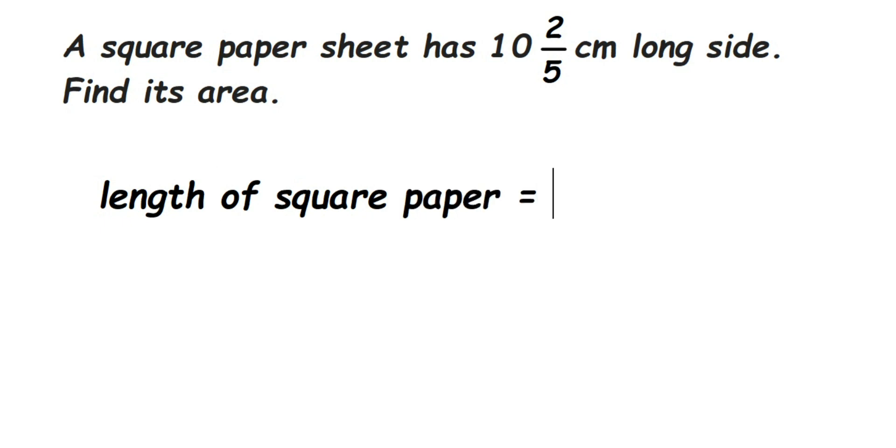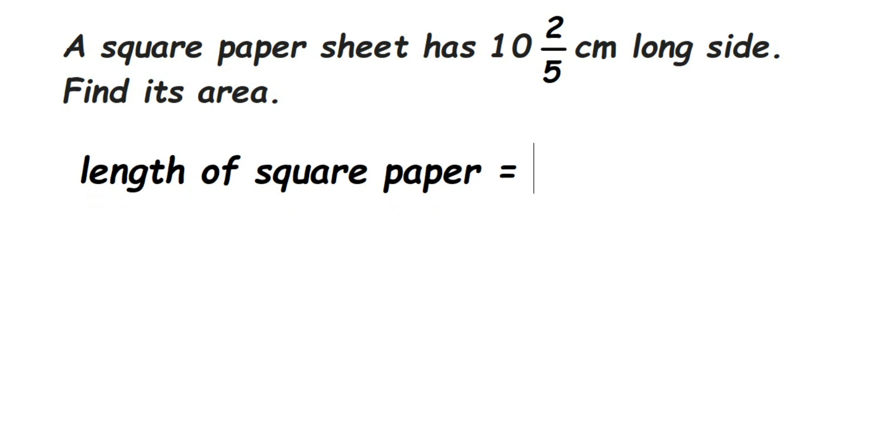So let me write it down here, it is 10 and 2/5 centimeter. Now this we're going to convert into an improper fraction, so convert it. First you multiply denominator and whole number, multiply them. Whatever answer we got, we have to add with the numerator. So 5 tens are 50, 50 plus 2 is 52.